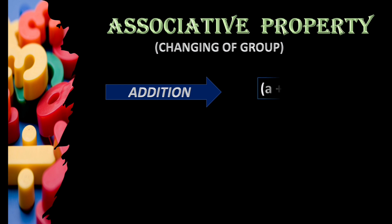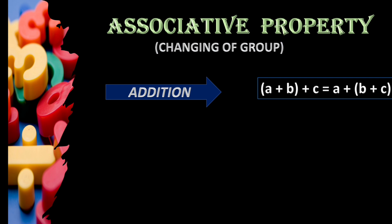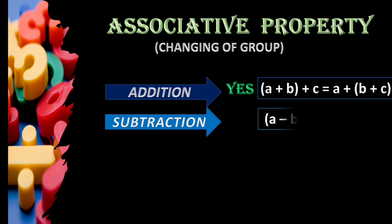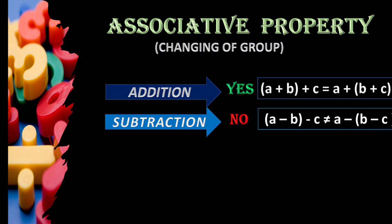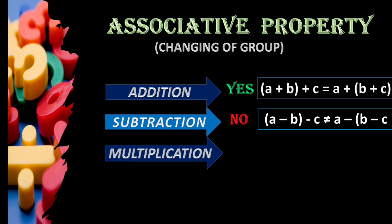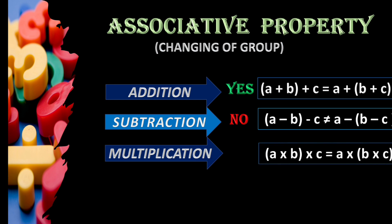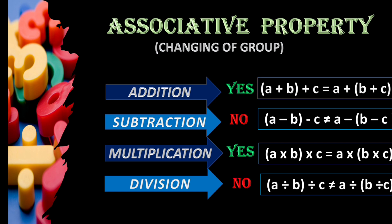Let us check for addition: with three numbers a, b, and c — on the LHS, a and b are in one group, and on the RHS, b and c are in one group. If the result is the same, it is associative — and for addition it is always yes. For subtraction: subtracting three numbers a, b, c does not give the same result when we change the grouping. For multiplication: with a, b, c, changing the grouping still gives the same result. But for division it is no — changing the group gives different results. So addition and multiplication are associative, but subtraction and division are not associative for any numbers.